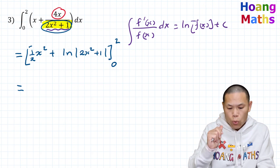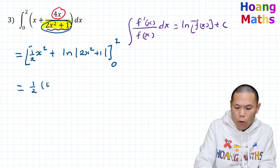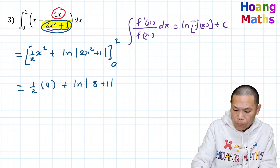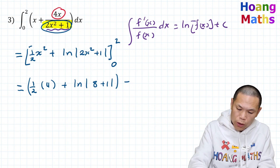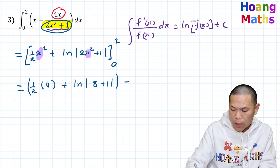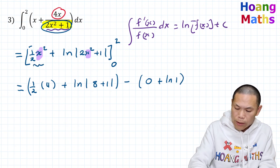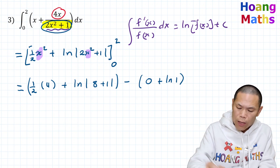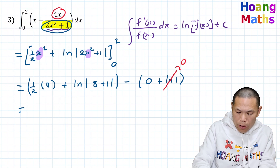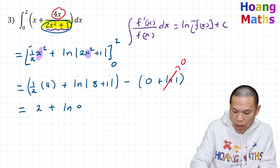Now I evaluate this. When x equals 2: 2 squared is 4, half of 4 is 2. And 2 times 2 squared is 8, plus 1 is 9, so we get plus ln of 9. Then minus when x equals 0: 0 squared is 0, and 2 times 0 plus 1 is 1, so we get 0 plus ln of 1. Now ln of 1 is 0, any base. So the final answer is 2 plus ln of 9.